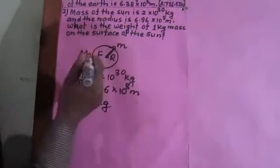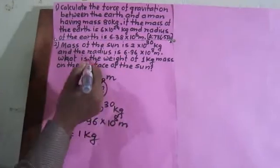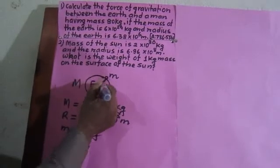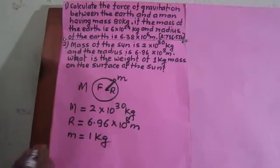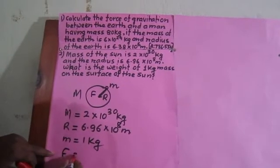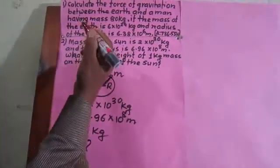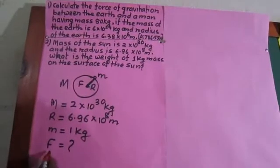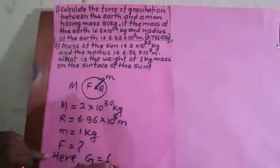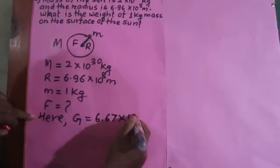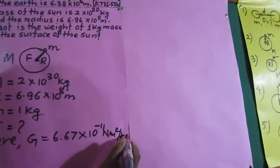What is the weight of one kg? Weight means the gravitational force of the sun acting on this one kg mass — with what force it is attracting this mass towards the center is the weight. The same is called the gravitational force of the sun acting on this body. That's why gravitational force F is asked. One point is missing here: the value of G is not given. Capital G — we know this value: G = 6.67 × 10⁻¹¹ N·m²/kg².